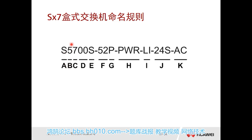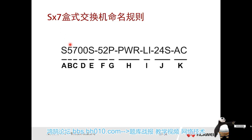Part B represents the series of the product — it could be 2700, 3700, 5700, or 6700. Different series have different bandwidths, different product positioning, and differences between Layer 2 and Layer 3. Part C indicates the '7' — the second character in SX7. In our S-Series switch, this '7' indicates that it is a product series for enterprise networks.